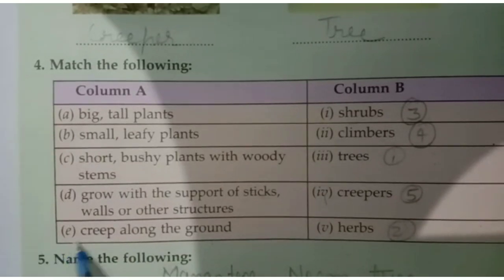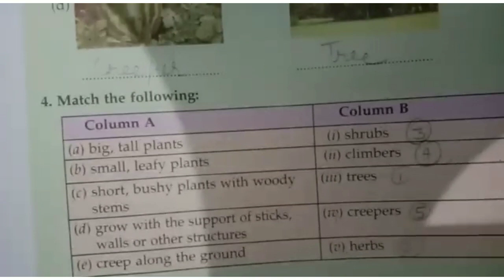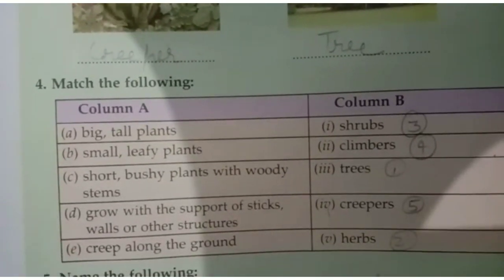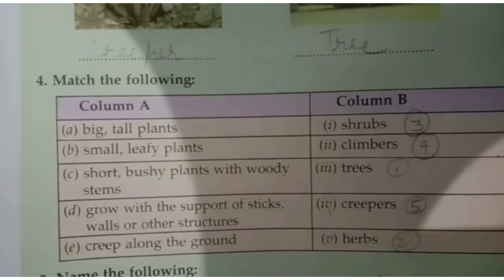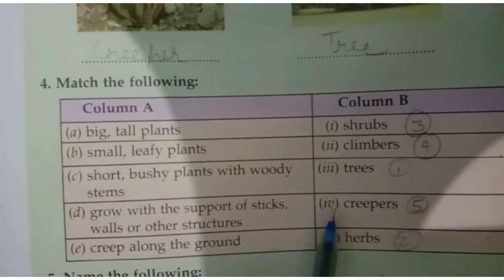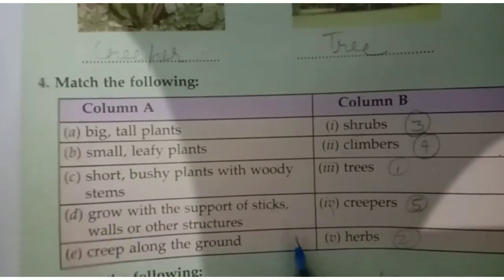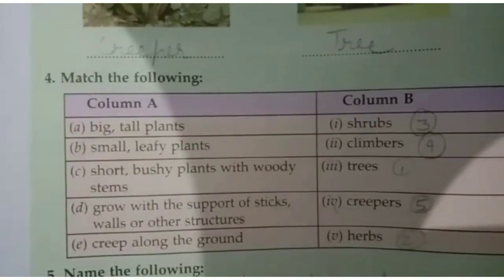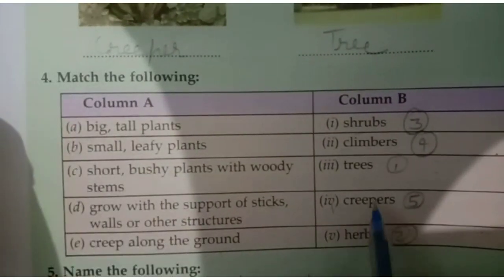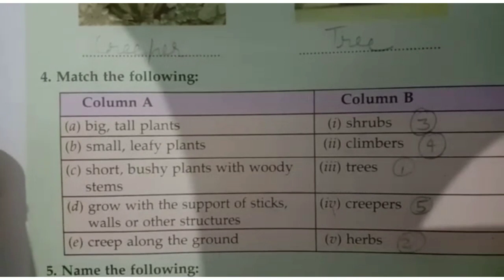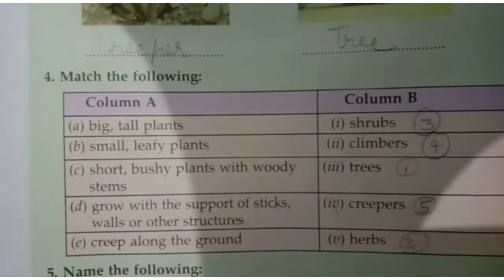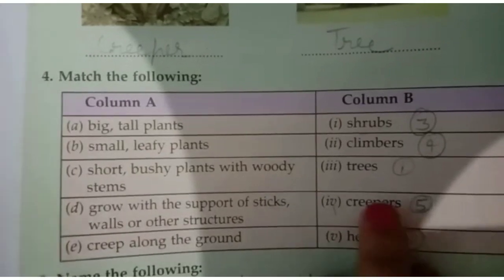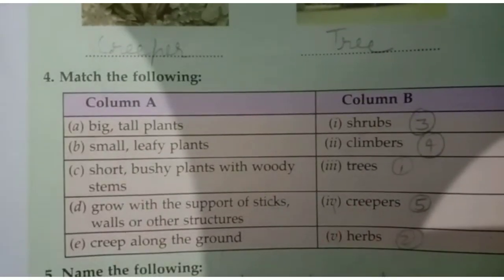E is 'creep along the ground.' Plants that spread along the ground are known as creepers. Match E with creepers — that is the fourth option.